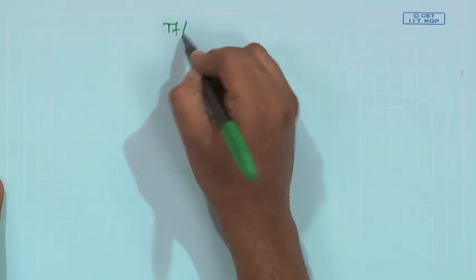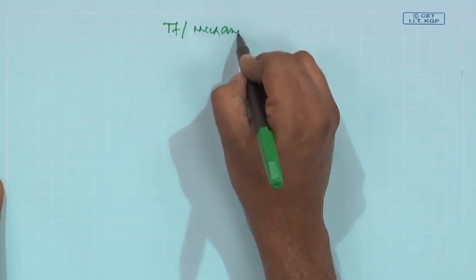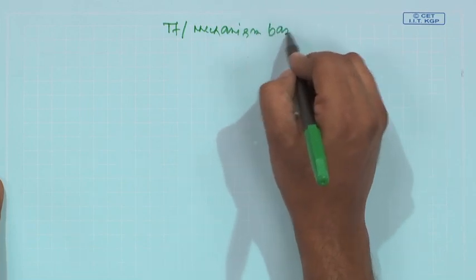Welcome back students. We are discussing several mechanistically important transformations, and if you are quite familiar with the mechanism of some transformations, it is very easy to formulate a retrosynthetic pathway. We are discussing some unusual transformations and their mechanisms, which are very important for exam purposes. The heading for this section is: transformation as well as mechanism-based strategies.